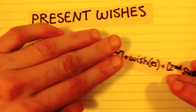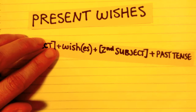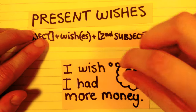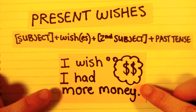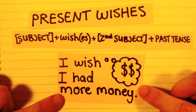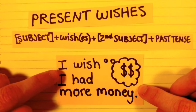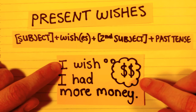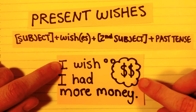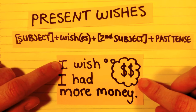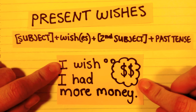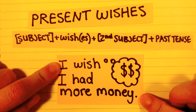So for example, we can say, 'I wish I had more money.' 'Had' is past tense. This person wants to have more money right now, so they say, 'I wish I had more money.'